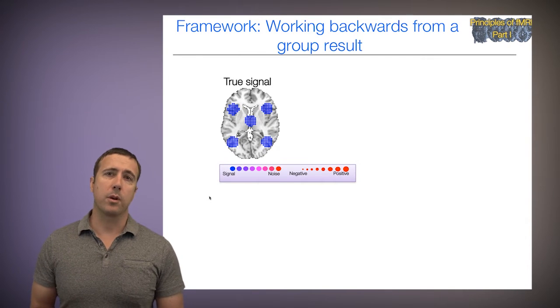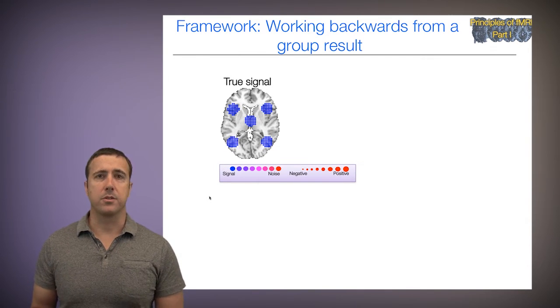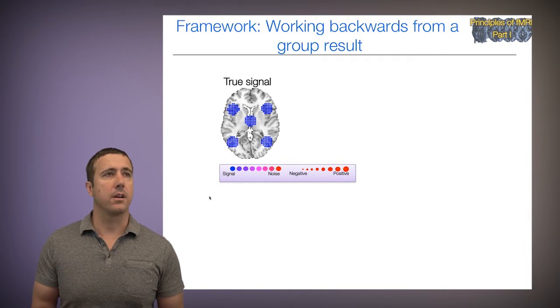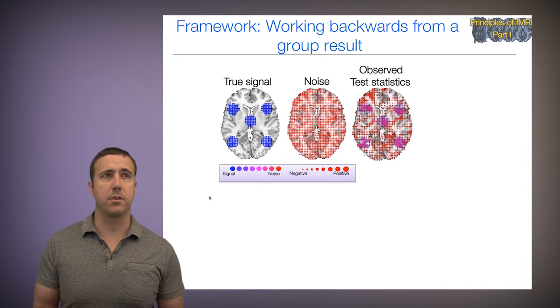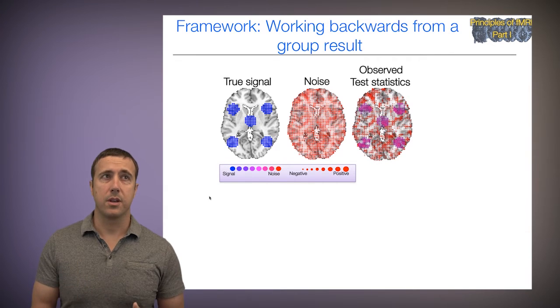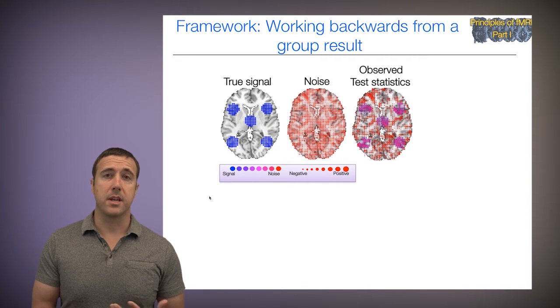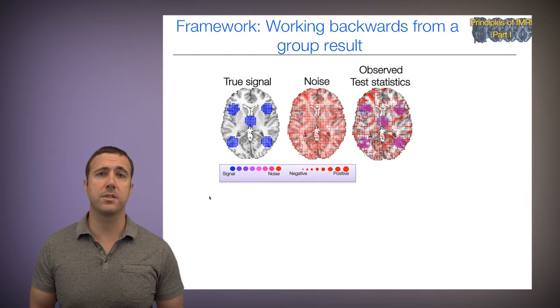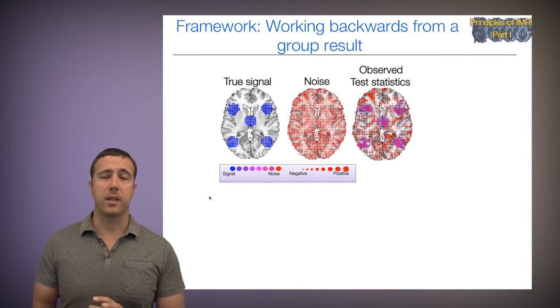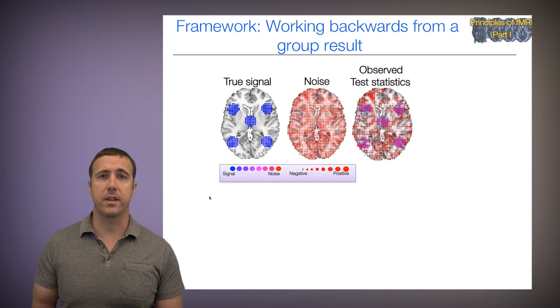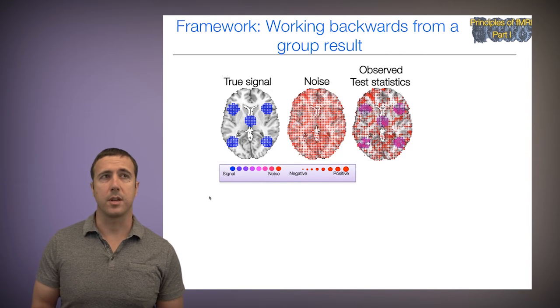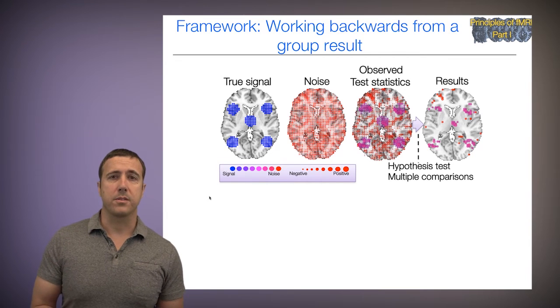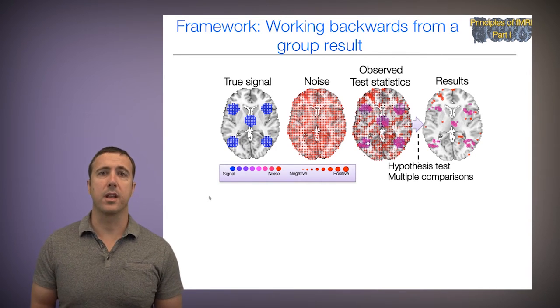This is our framework. We're going to work backwards from a group result to an individual subject result. Here's some true signal mixed with noise, which yields a mixed map of signal plus noise. If we do a statistical test in the group, we get a test statistic at each voxel, like a T value. We threshold that, correcting for multiple comparisons, and we get results which we then interpret.